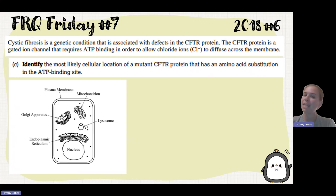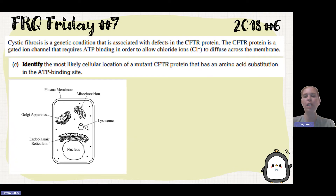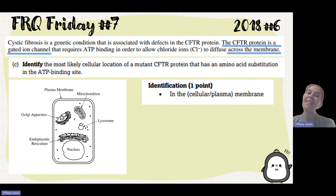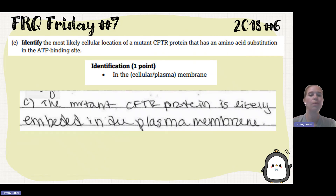Part C asks: identify the most likely cellular location for the mutant CFTR protein that has an amino acid substitution in the ATP binding site. The protein is still going to be found in the plasma membrane because it's a gated ion channel meant to allow things to diffuse across the membrane — it must be sitting in the membrane as a transport protein. Again, this is an identification — you could write just one word, but always write complete sentences. The student said the mutant CFTR protein is likely embedded in the plasma membrane and got credit.